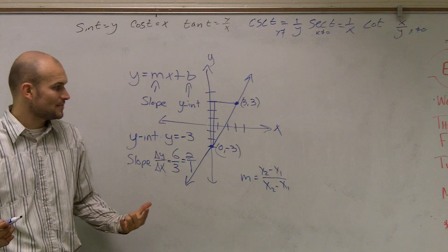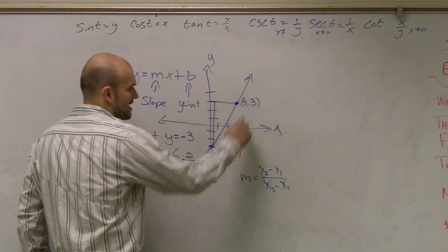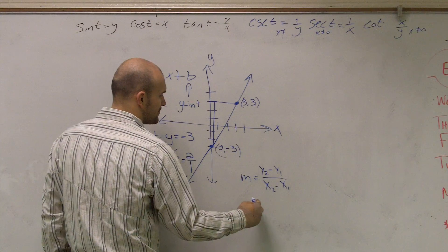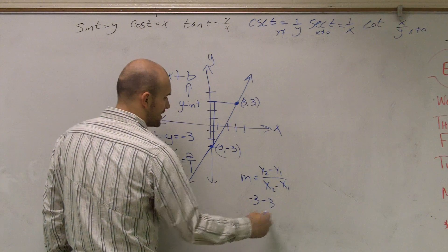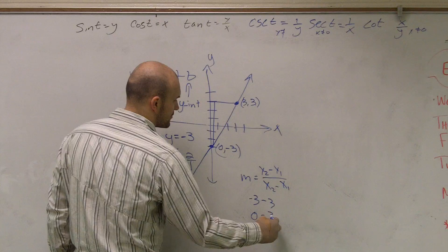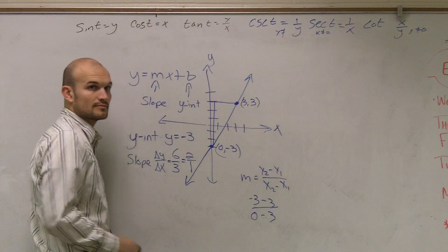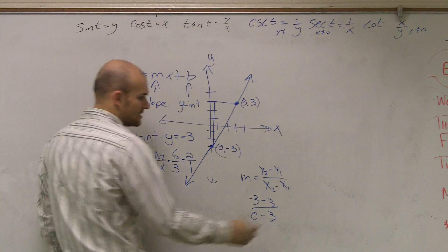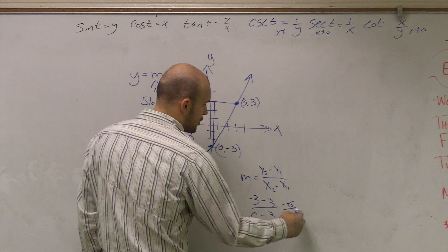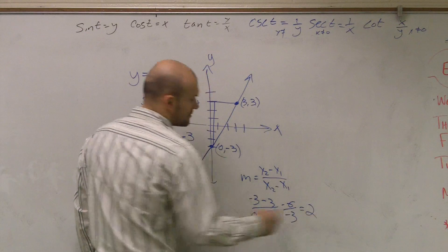So therefore, if I want to go and find the slope now, you could subtract your two y values. Do negative 3 minus 3 and then 0 minus 3. Negative 3 minus 3 is going to give you a negative 6 over negative 3 still equals a positive 2.